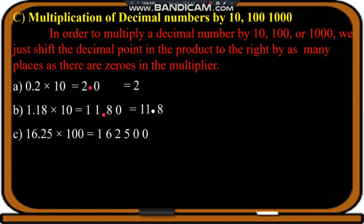If we simply multiply 1.625 into hundred, we will get 1625 with two zeros. The decimal will come after two digits from the right, that is after five. According to the property, we shift the decimal two places to the right — after two digits: one place is two, second place is five. So we get the answer 162.5.